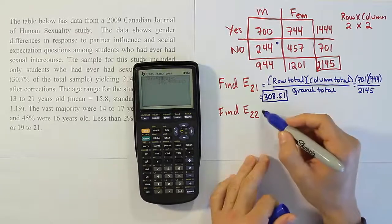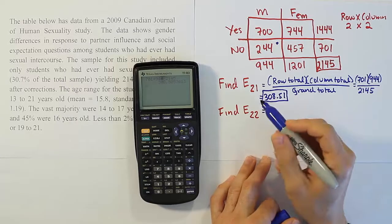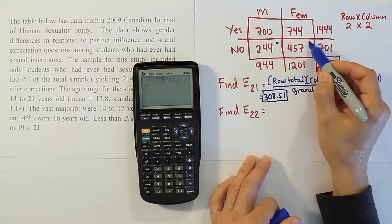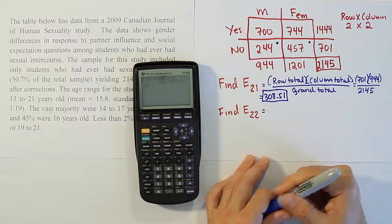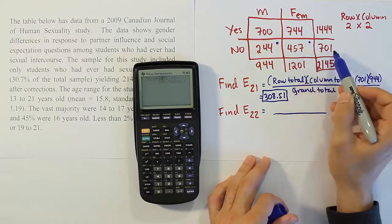Let's look at the expected cell count for the cell in address 2,2. That means the second row, second column. That's this value. So first let's plug in the row total. That's 701 again. Times the column total.